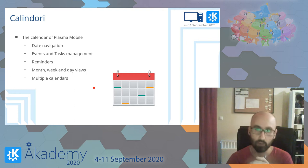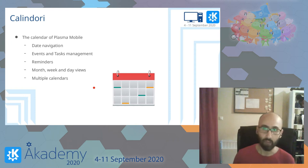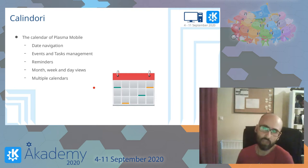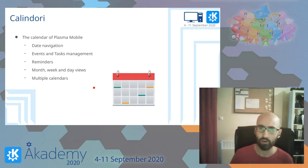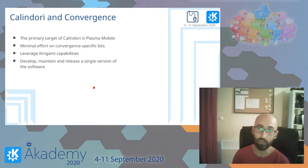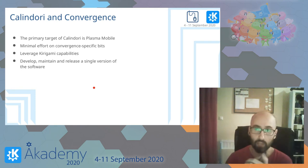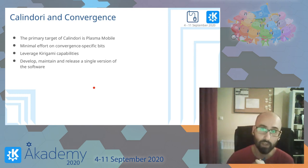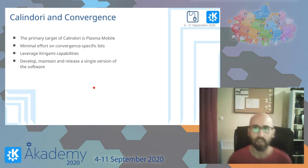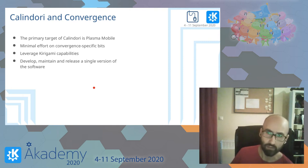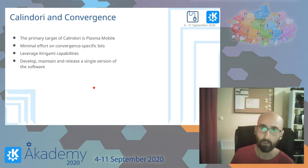As a showcase application to present the convergence capabilities of Kirigami, I'm going to use Calendari. I'm the maintainer of Calendari, which is the calendar of Plasma Mobile. It offers the basic functionalities a calendar user should expect, like date navigation, events management, scheduling of alarms, and stuff like that. Calendari is a perfect candidate as a showcase application because when we started working on it, we had only Plasma Mobile in mind, but we leveraged the convergence capabilities of Kirigami without spending much time on the convergent bit.